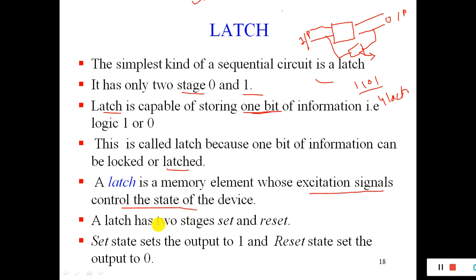A latch is a memory element whose excitation signals control the state of the device. Excitation signals are those signals which decide the minimum number of inputs for the required output. A latch has two states: set state, which sets the output to one, and reset state, which sets the output to zero.